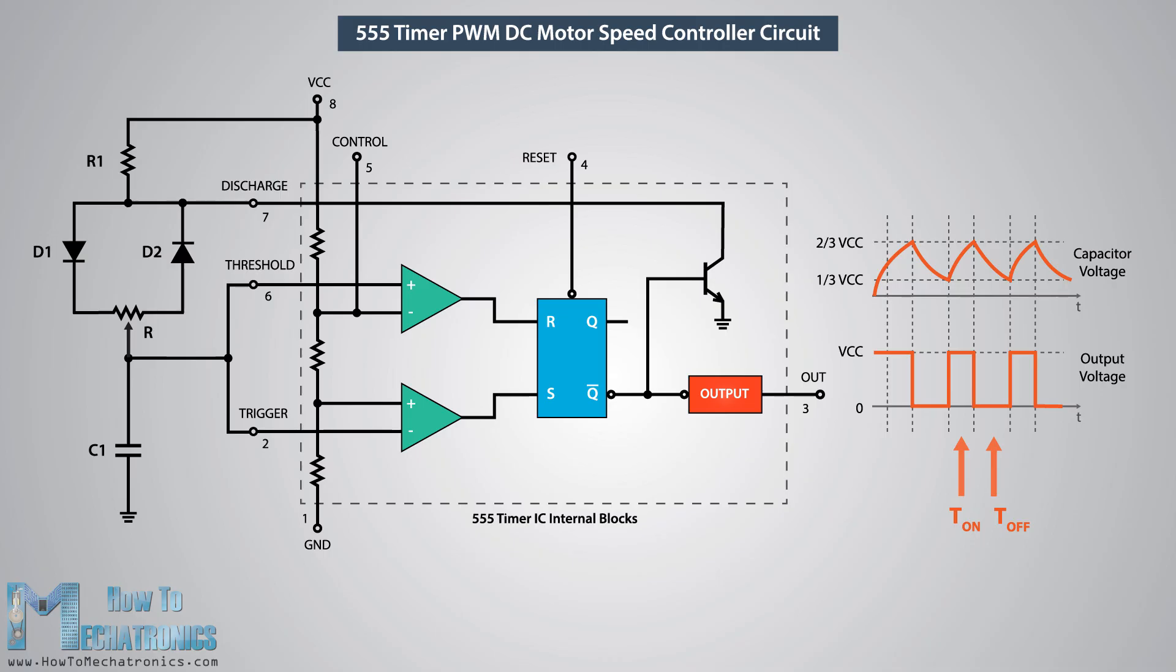In this configuration the on time will depend on resistor R1, the left side of the potentiometer, and capacitor C1, while the off time will depend on capacitor C1 and the right side of the potentiometer. We can also notice that in this configuration the period of one cycle, thus the frequency, will always be the same because the total resistance while charging and discharging will remain the same.